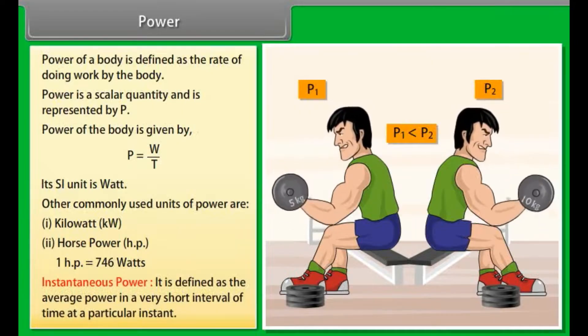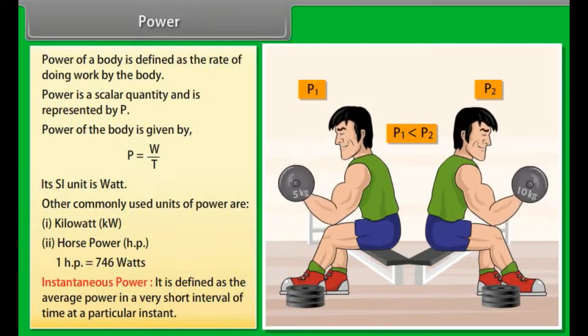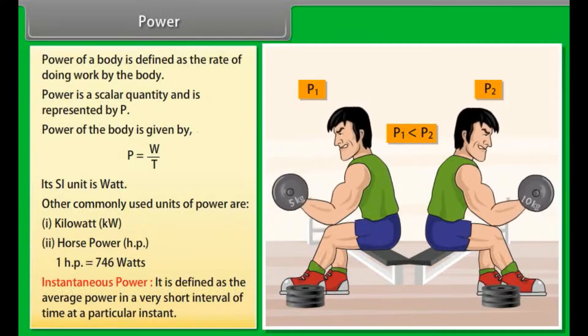Instantaneous power. It is defined as the average power in a very short interval of time at a particular instant.